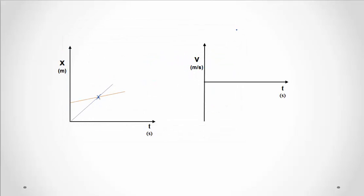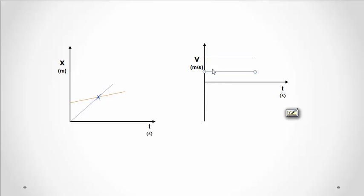How would that look on the velocity graphs? Again, we'd have constant positive velocity for the blue line, and the orange line would also be constant and positive but of lesser magnitude than the blue. The velocity graphs don't include information about starting location — they just reflect the slopes of the position lines.